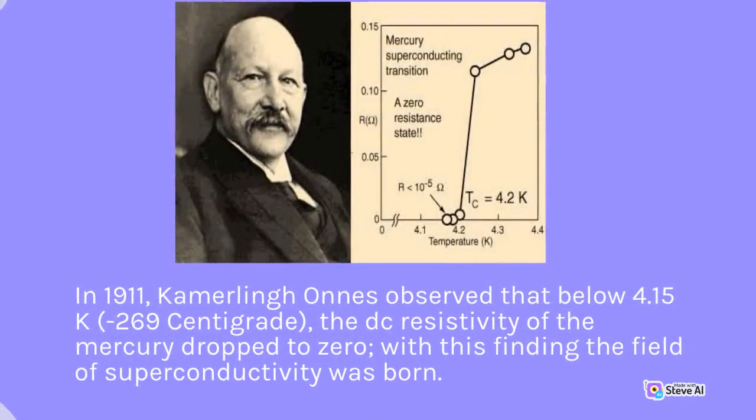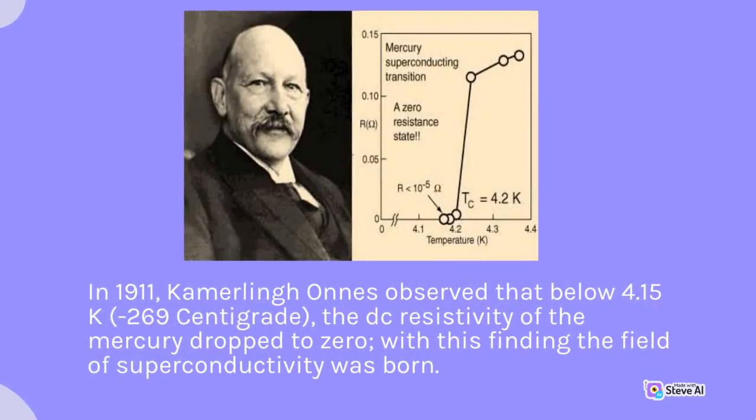In 1911, Kamerlingh Onnes observed that below 4.15 K, the DC resistivity of mercury dropped to zero. With this finding, the field of superconductivity was born.